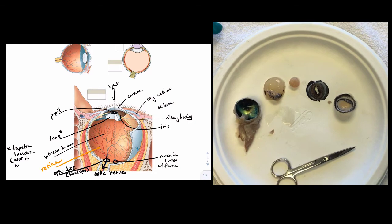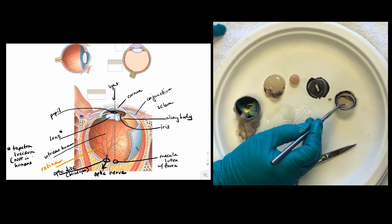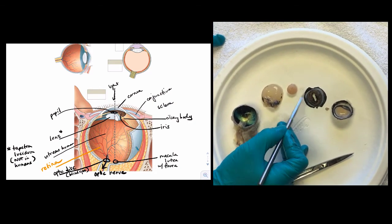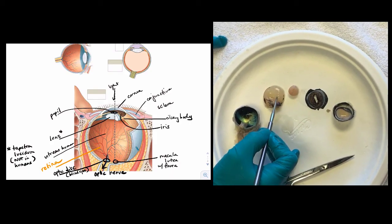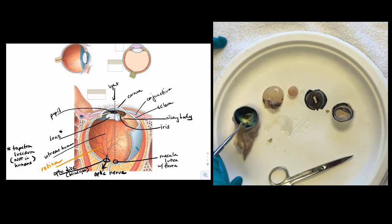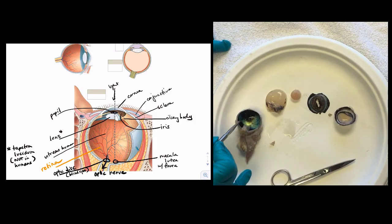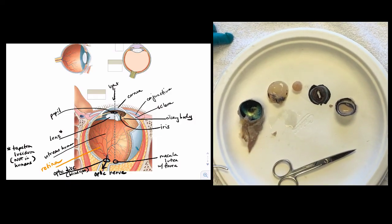You can now view all of the structures of the eye: the cornea, the iris, the lens, the vitreous humor, the retina, and the tapetum lucidum. Let me know if you have any questions.